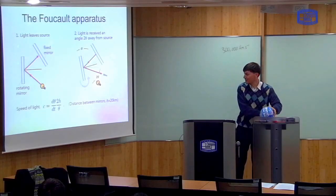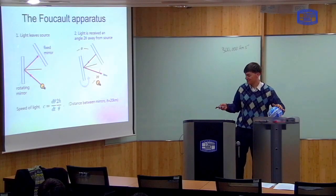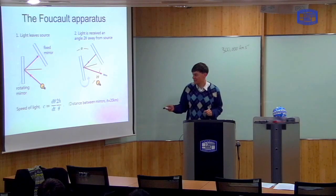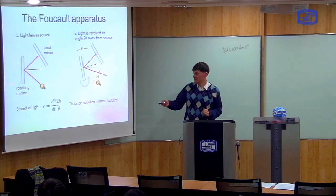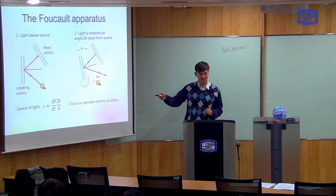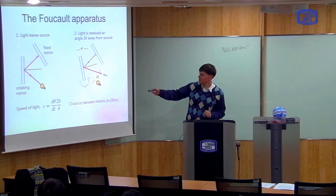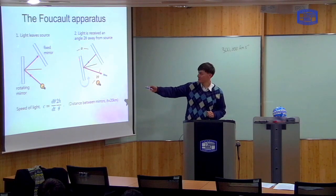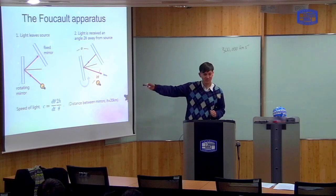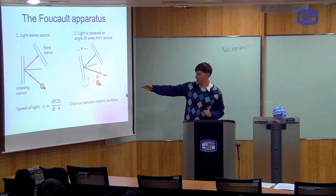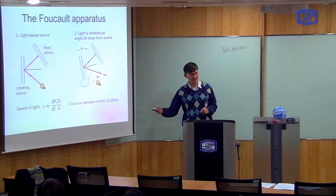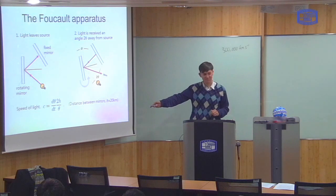So in the next slide, I draw a picture of this. So here's the light source. Once the light hits the first mirror here, goes to the second mirror, and it comes back. Once it's come back, the first mirror has rotated through an angle of theta. That means the light is reflected by an angle of 2 theta here. So if you measure the angle of 2 theta here, you can calculate the speed of light. The formula is there. We're going to derive this formula now.